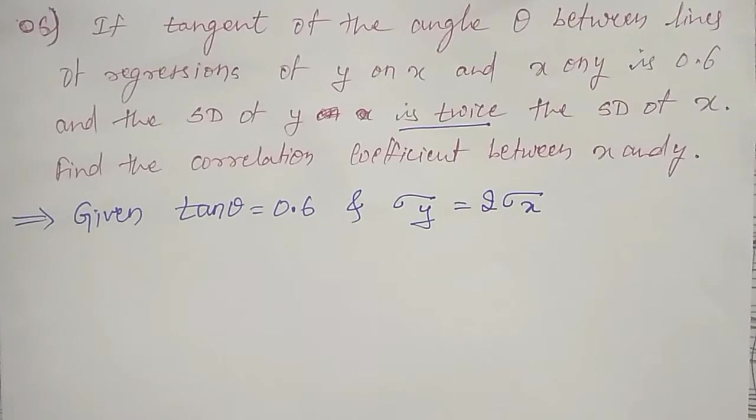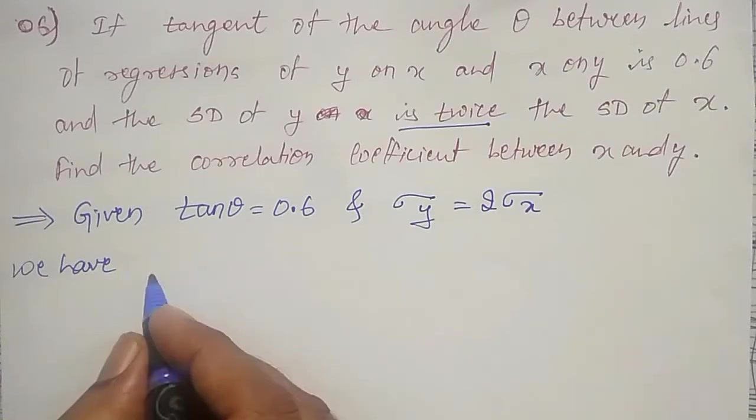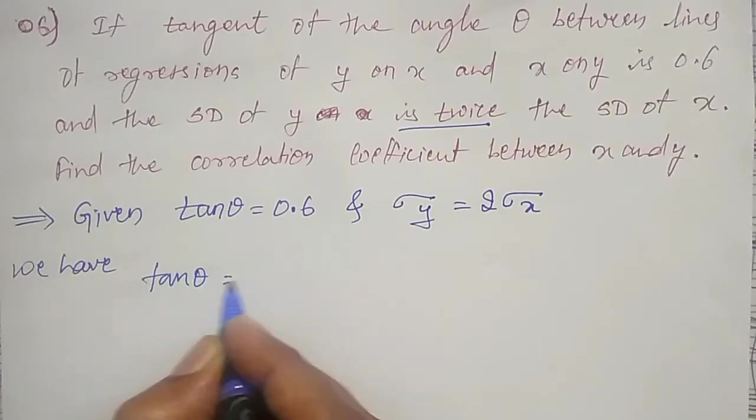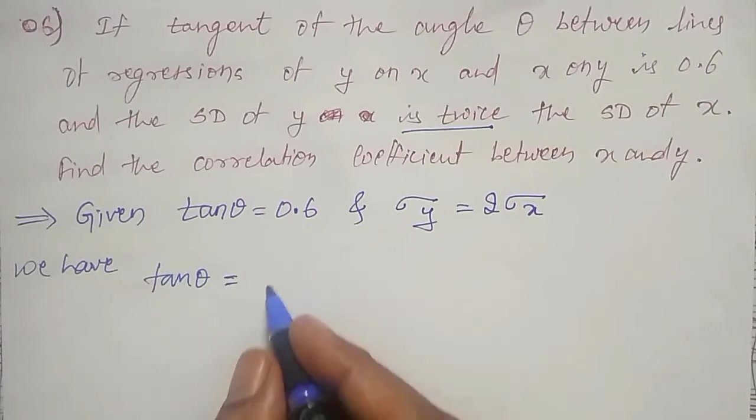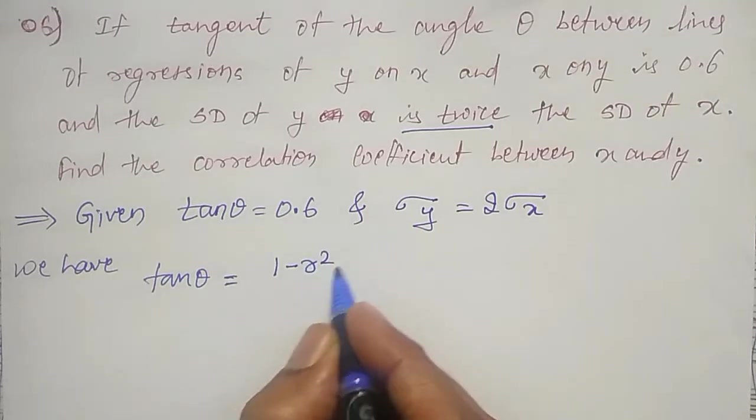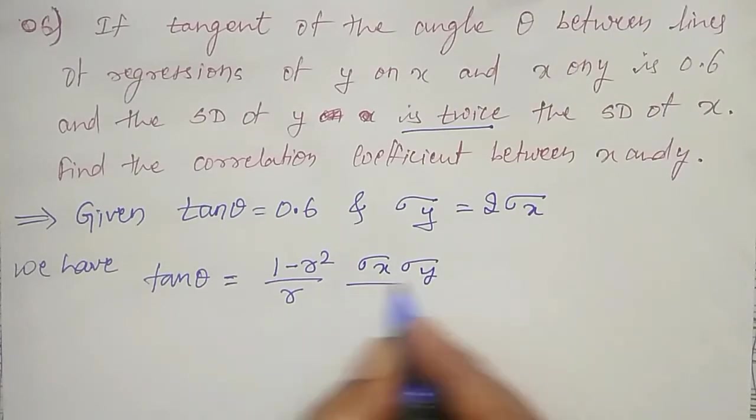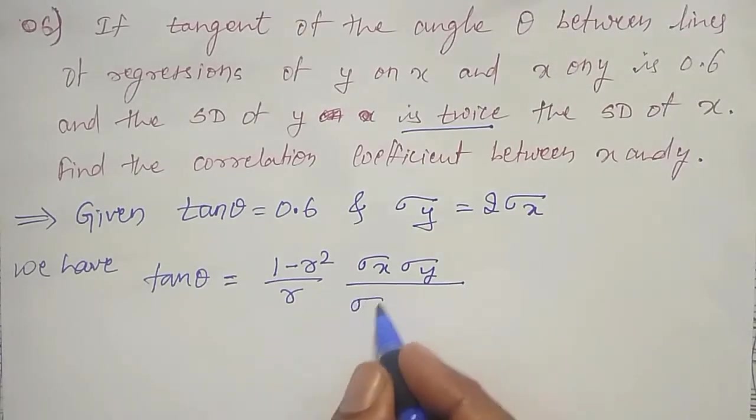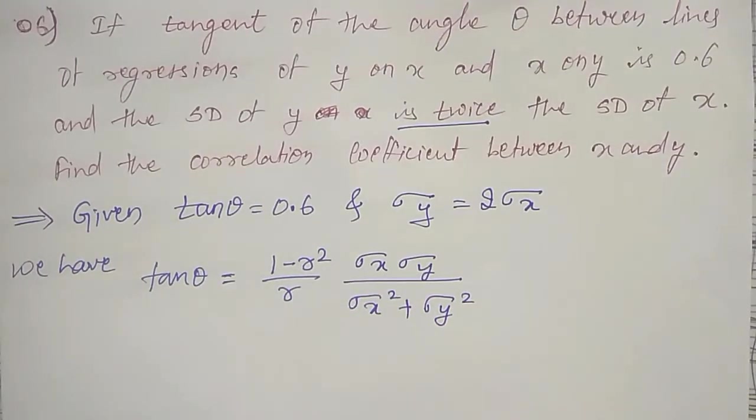We know that tan theta, if theta is the angle between the two regression lines y on x and x on y, is given by (1 minus r square) divided by r, times sigma x sigma y, divided by sigma x square plus sigma y square. This formula we know already, and I have derived this in one of my videos in the playlist curve fitting and statistical methods.